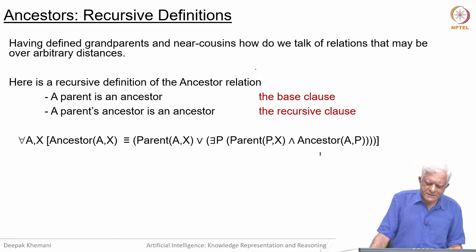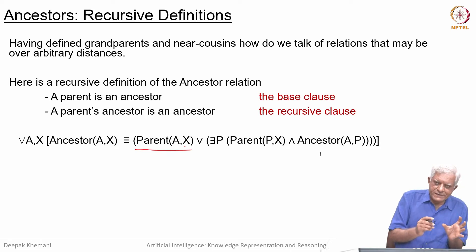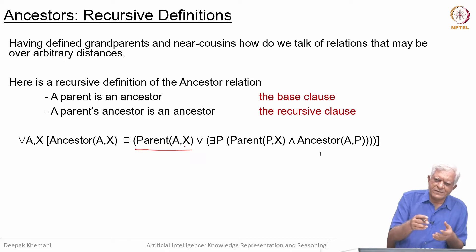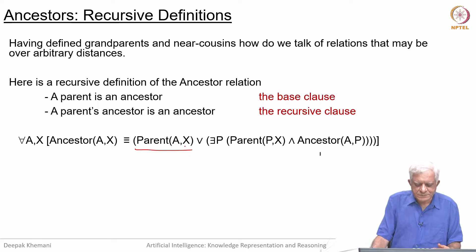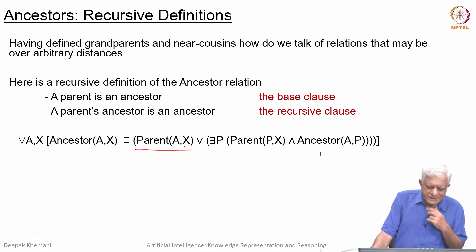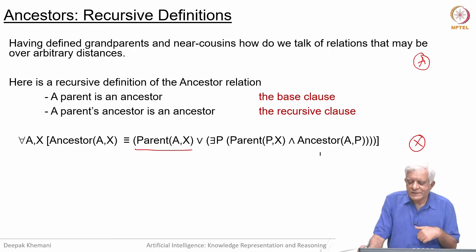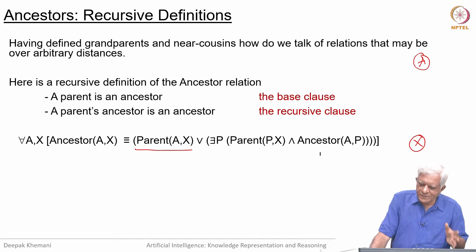That definition can be expressed in logic with two parts. When we say that A is an ancestor of X, either A must be the parent of X — we use inclusive or since that situation of both arising will never occur — or there exists a P such that P is the parent of X and A is the ancestor of P. We are talking about ancestor A and individual X, and want to see if they are from the same lineage, meaning there is a parent-child relationship all the way from A to X.